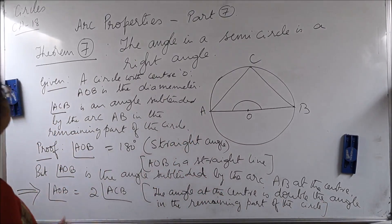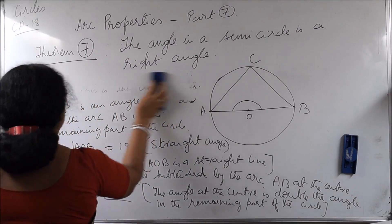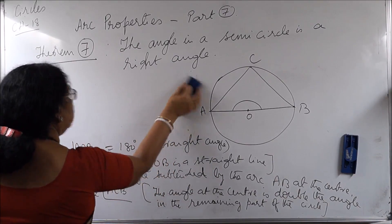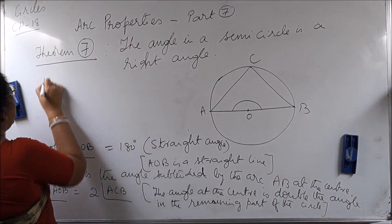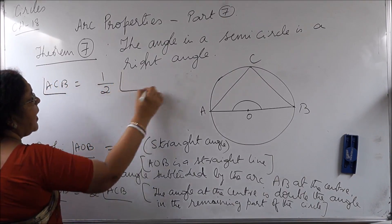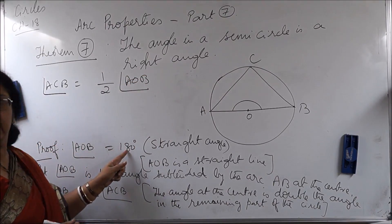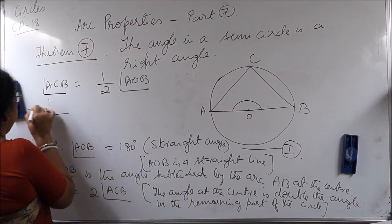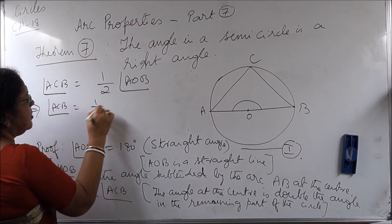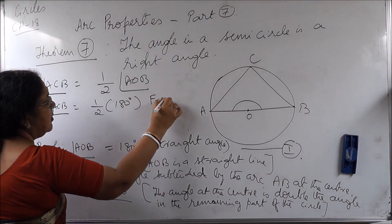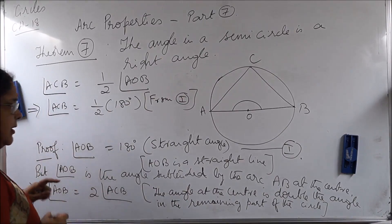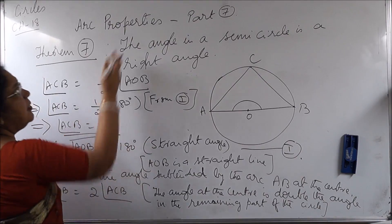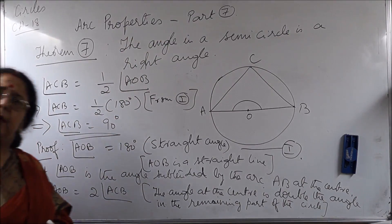This implies angle ACB is equal to half of angle AOB. We have already proved angle AOB is 180 degrees, so it follows that angle ACB is equal to half of 180 degrees, which gives angle ACB equal to 90 degrees. So the statement 'the angle in a semicircle is a right angle' is true. We have verified.